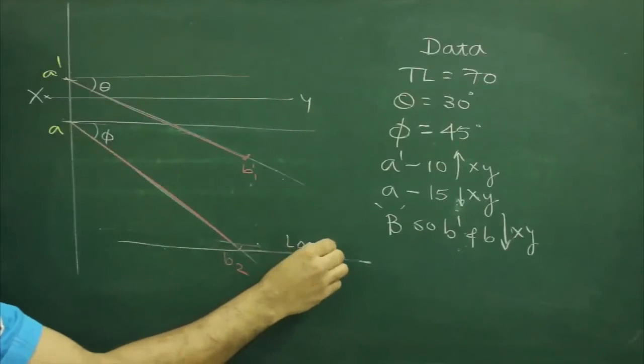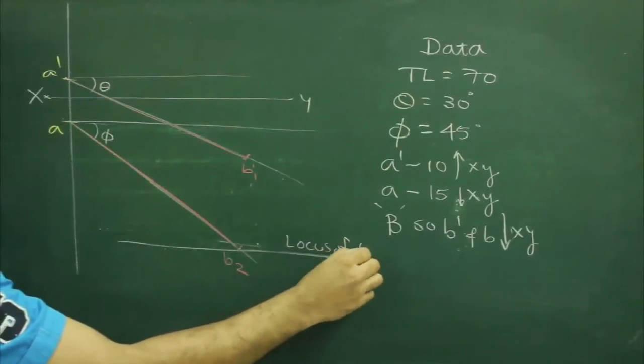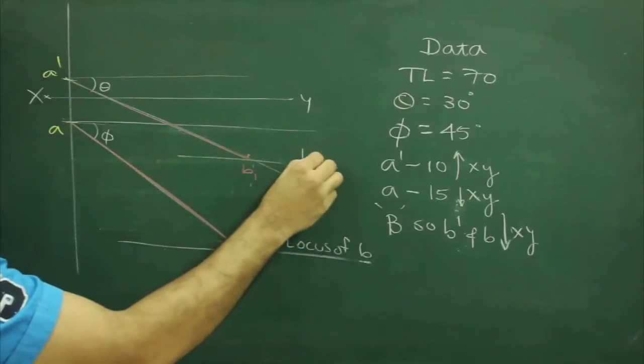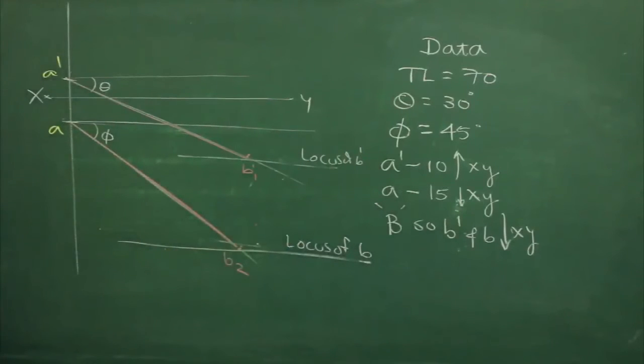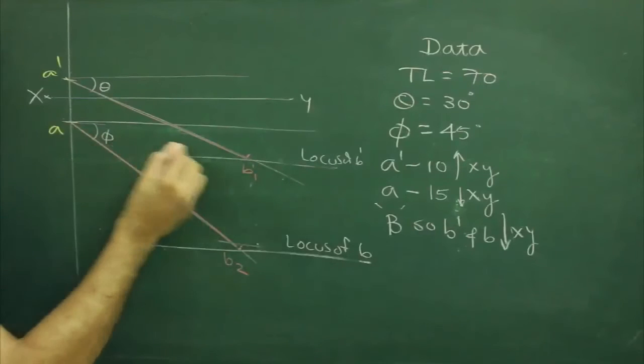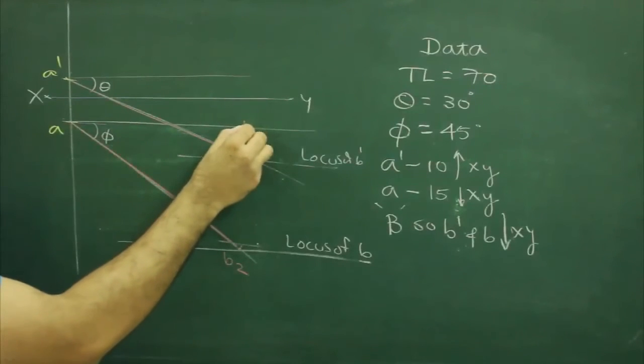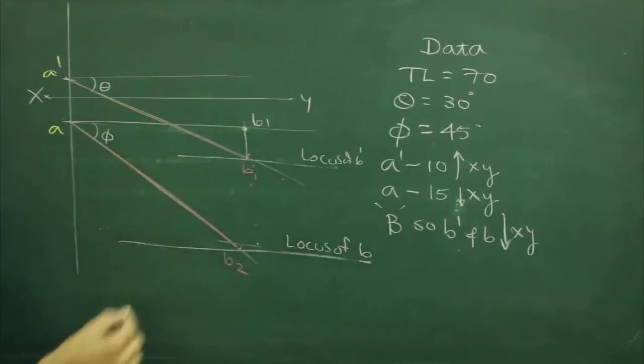Then we draw locus of b as well as locus of b dash. Then we will take the same angle where we will take b1 dash with a. That would be b1.